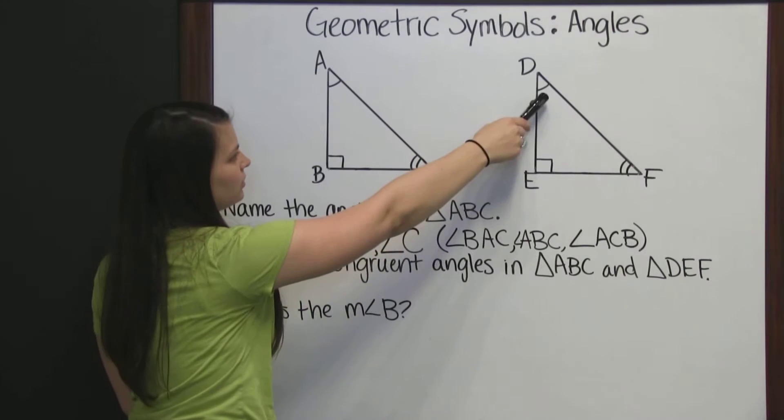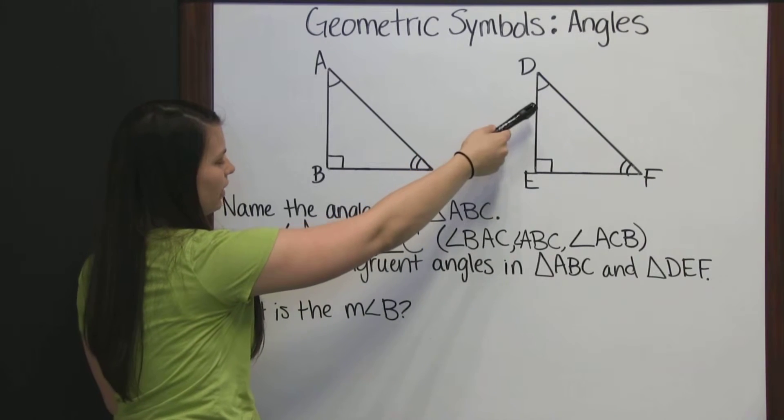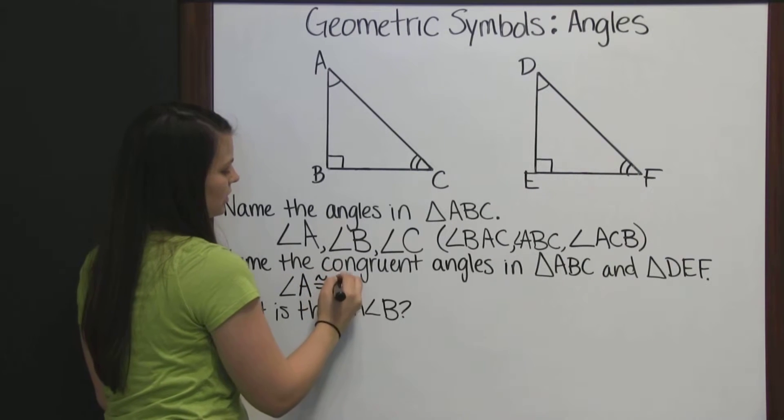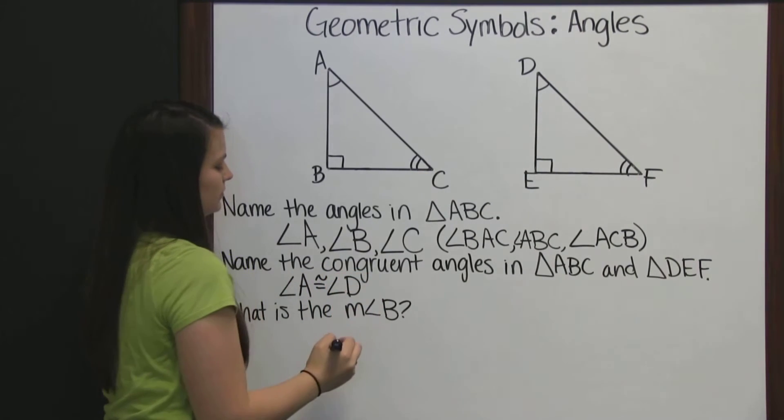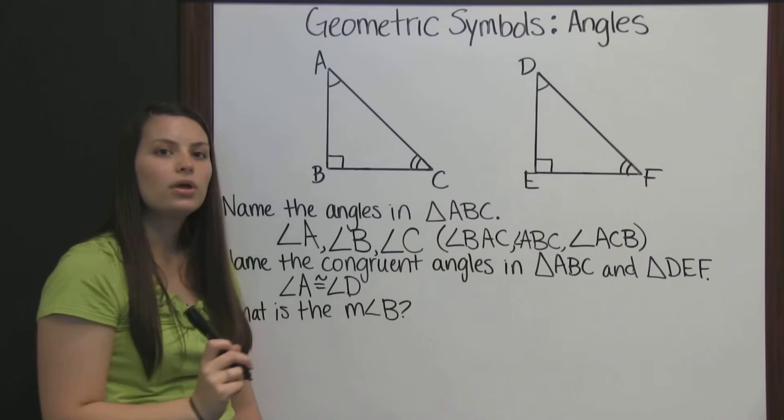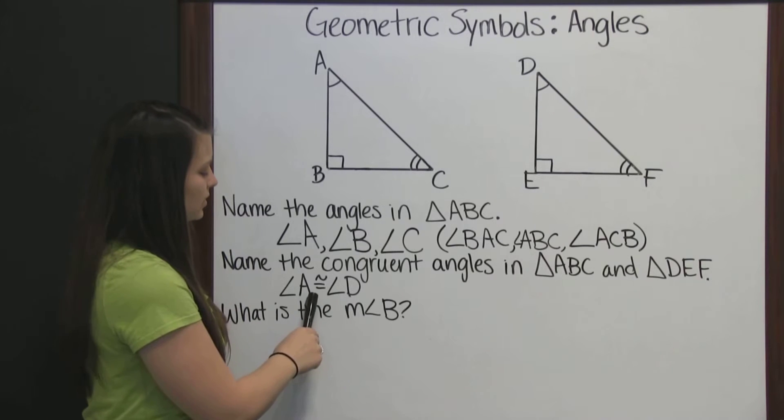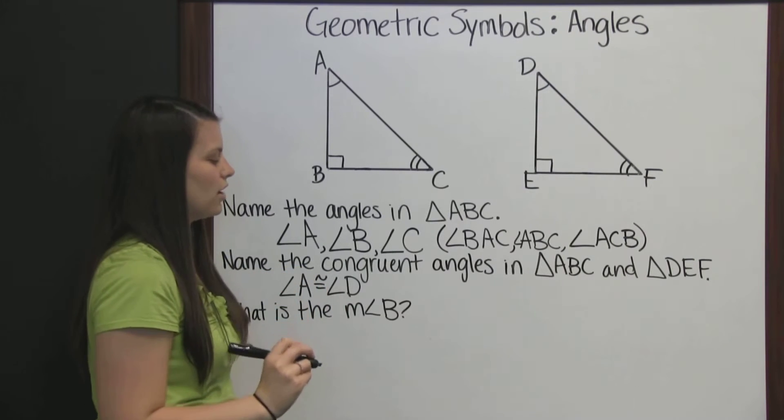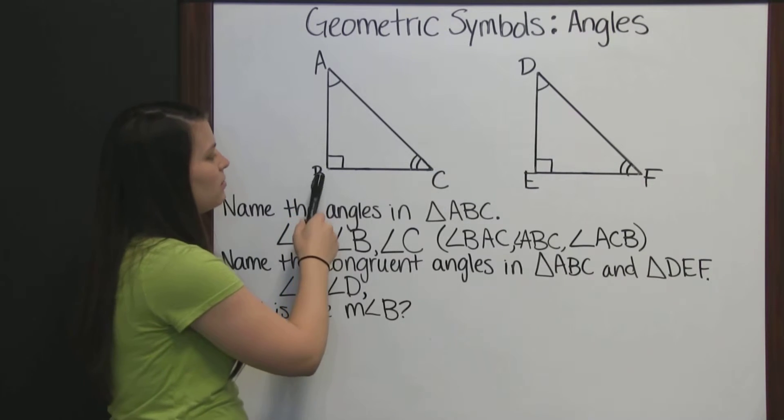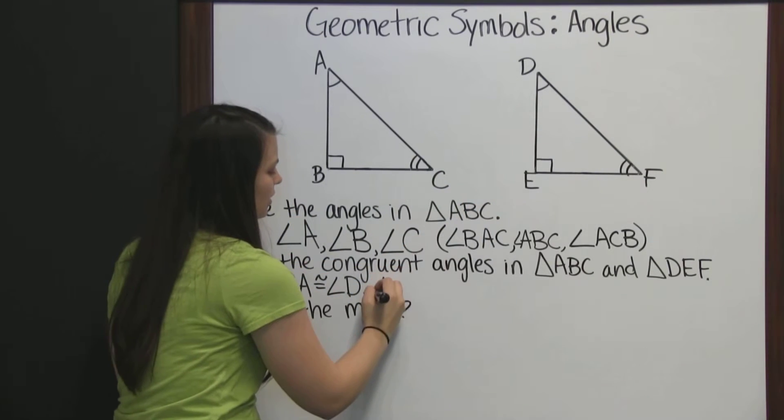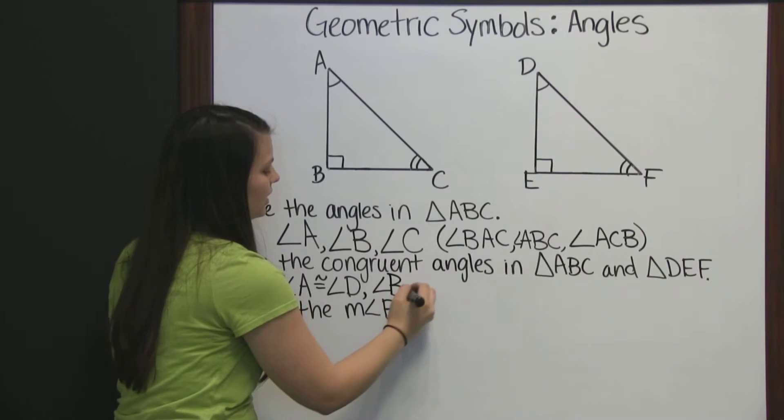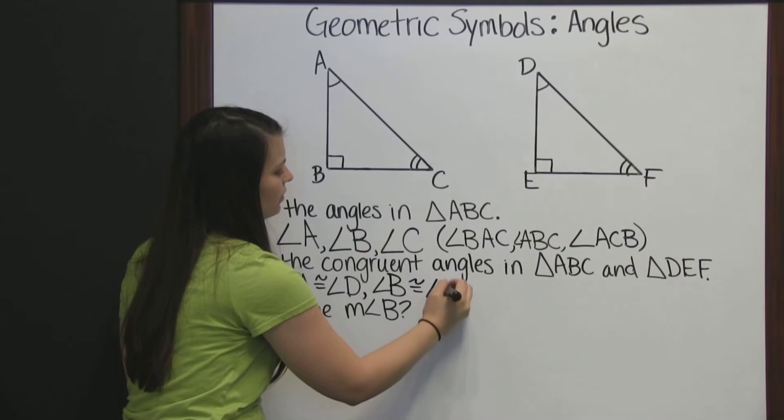Since angle A and angle D have the same mark on them, that means angle A is congruent to angle D. We use our angle symbols again, and this sign in the middle means congruent. It's an equal sign with a squiggly on top. Angle B is marked similarly to angle E, and we're going to talk about this symbol in just a minute. Angle B is congruent to angle E.